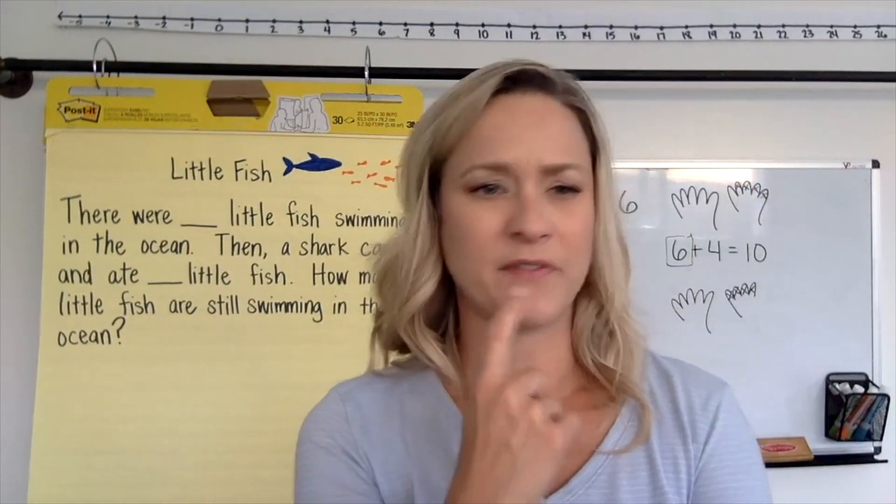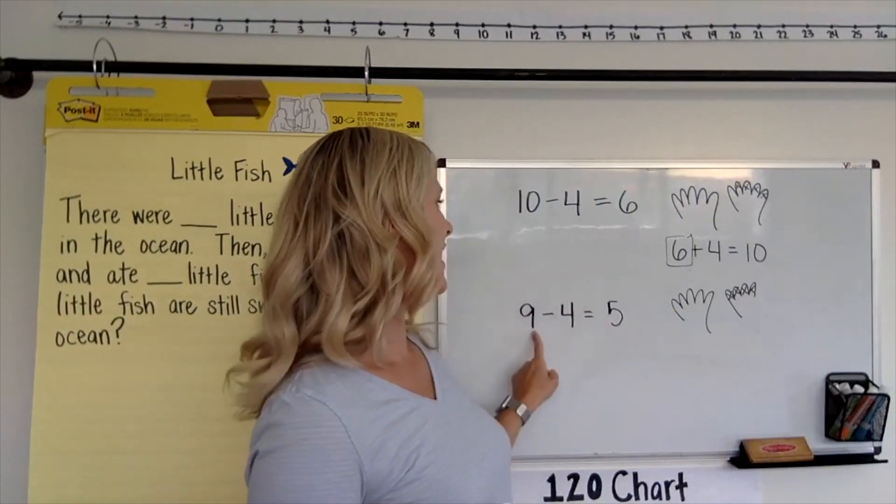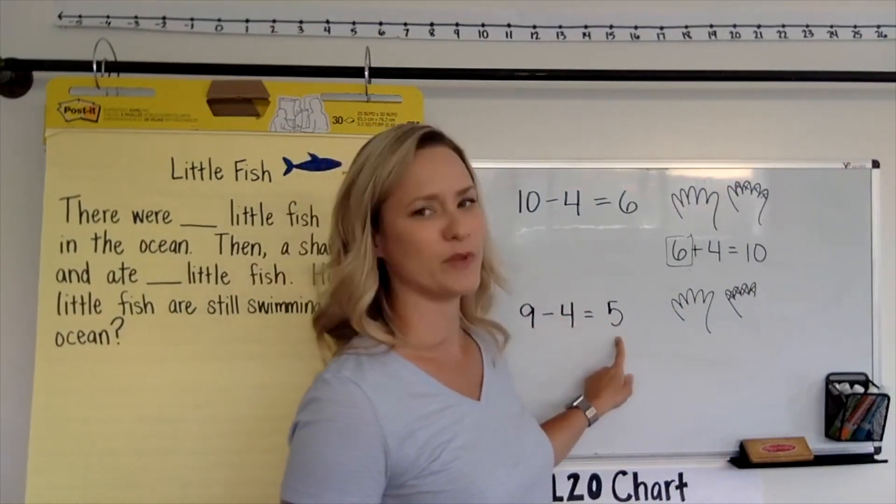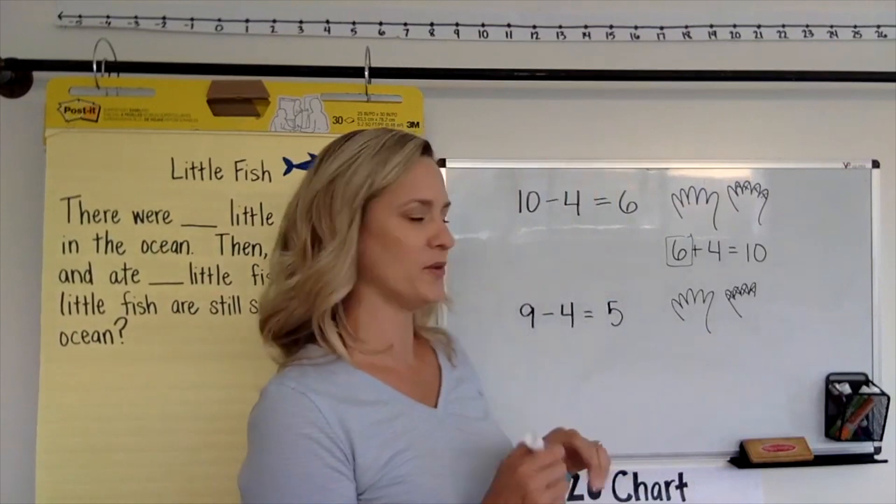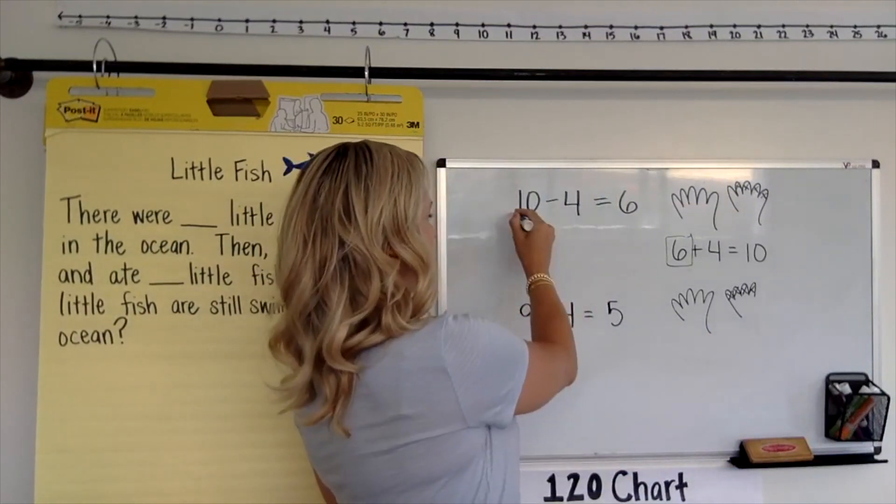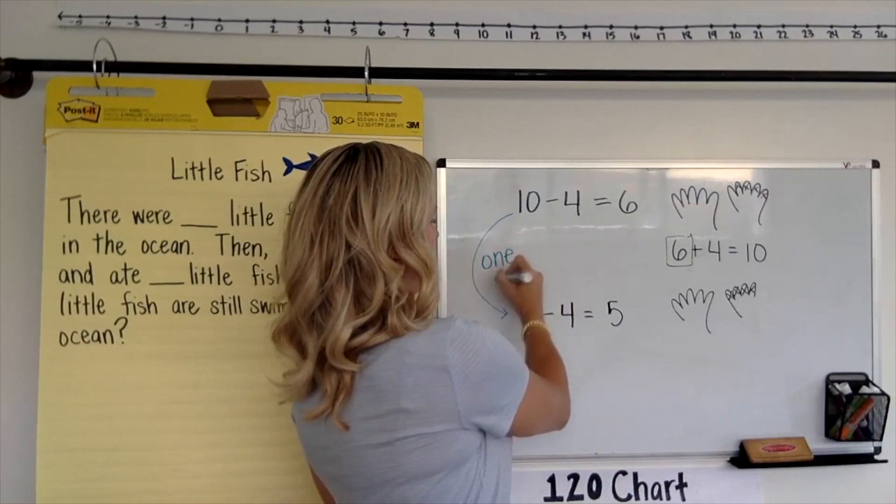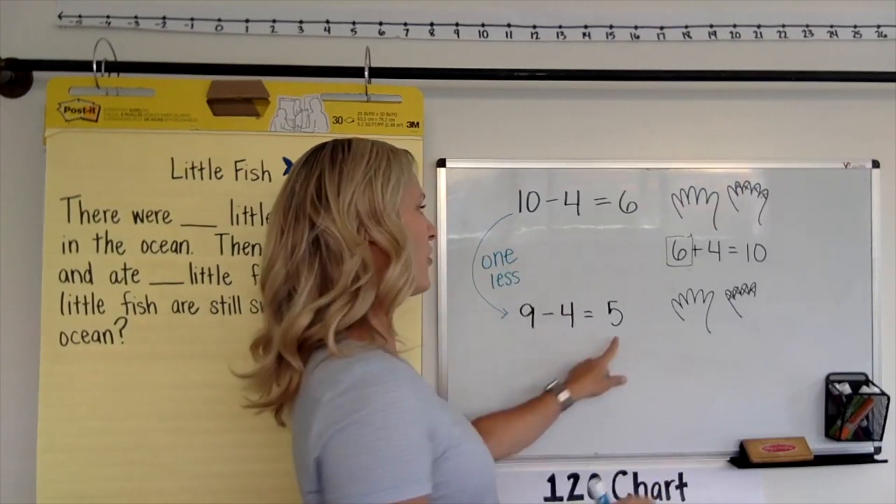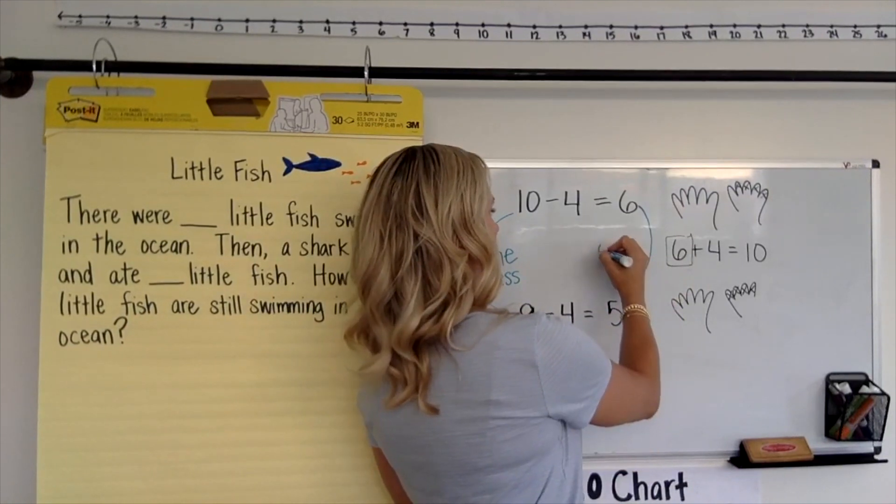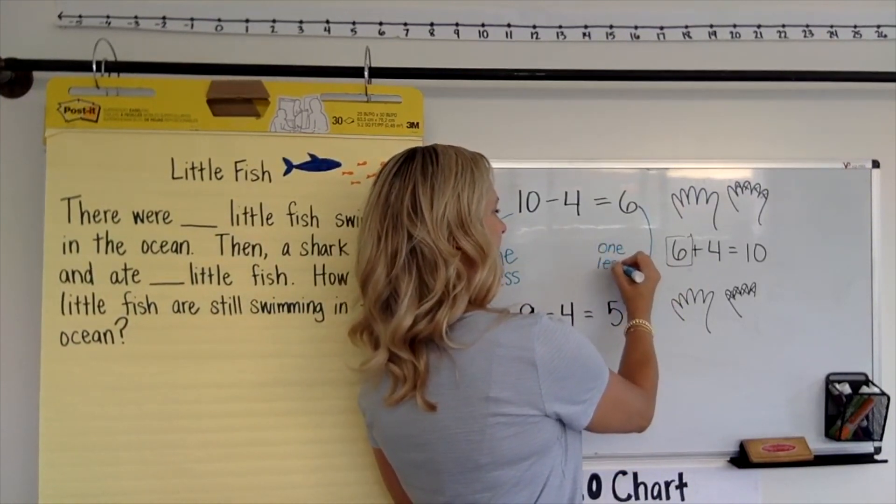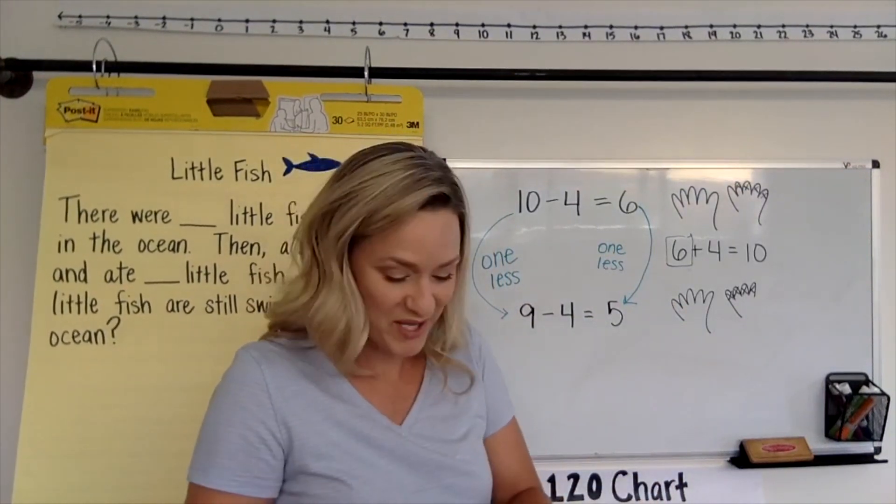I wonder if some of you did this. I knew 10 minus 4 was 6. So I knew 9 minus 4 would be 5. Did anyone see that? Maybe you knew 9 was just 1 less than 10. So 1 less. So the answer has to be 1 less. I wonder if any of you did that. Maybe you did. Tell me in the comments. Did I get one of your strategies?